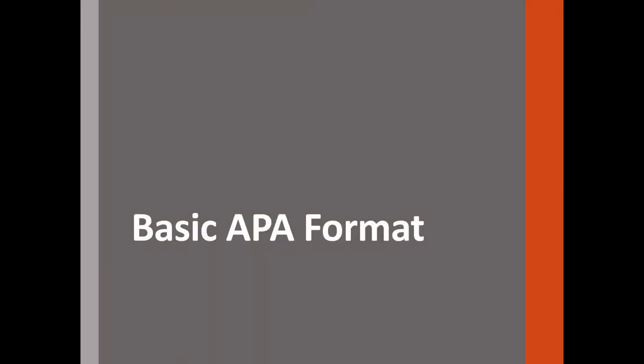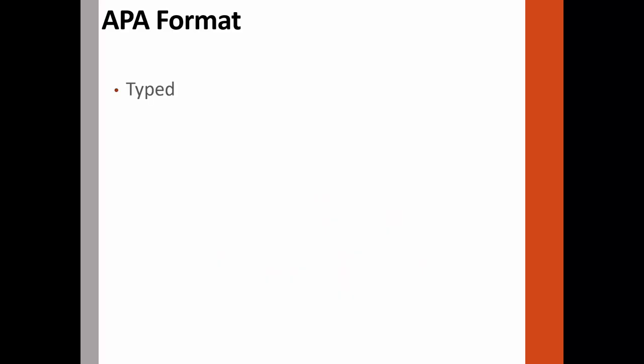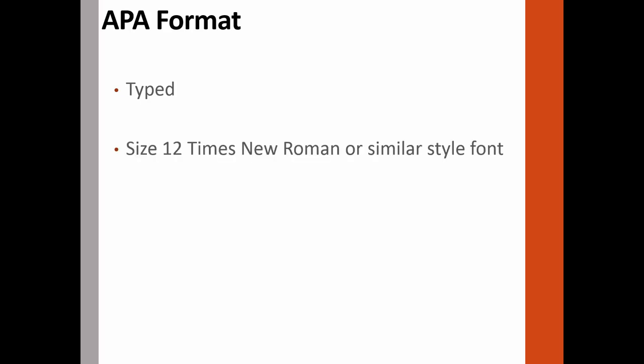Let's begin with basic APA formatting. An APA formatted paper will be typed using Times New Roman font or similar styles such as Arial, and the font size should be 12. In addition, the text should be double spaced and the paper should be formatted to include 1 inch margins on all sides.